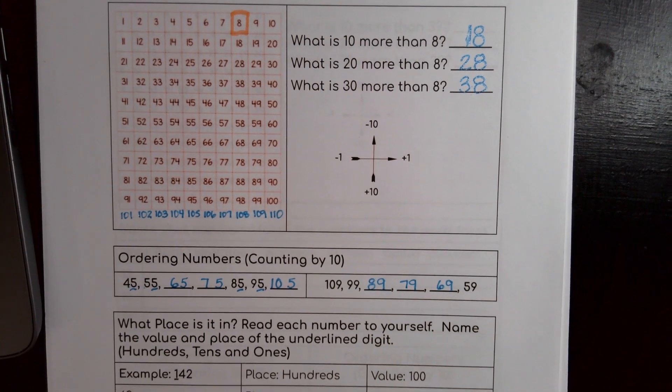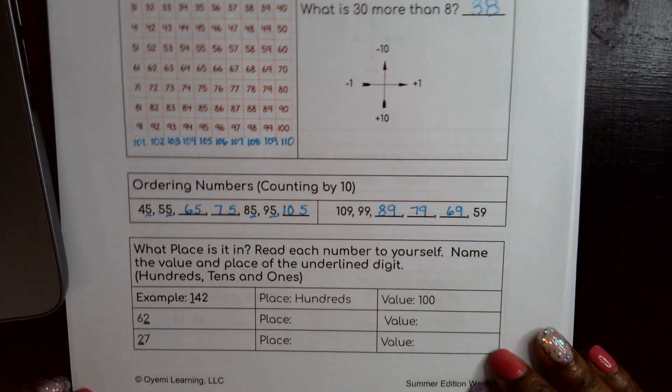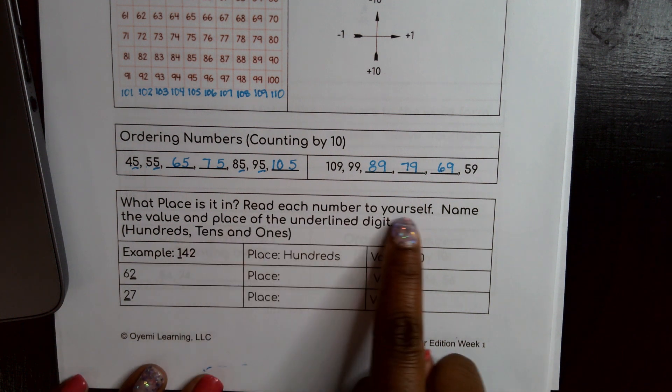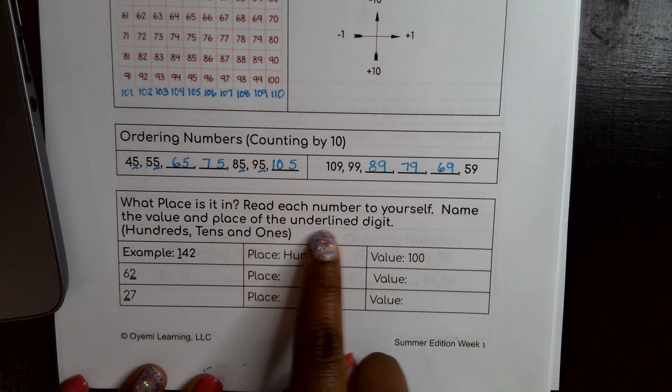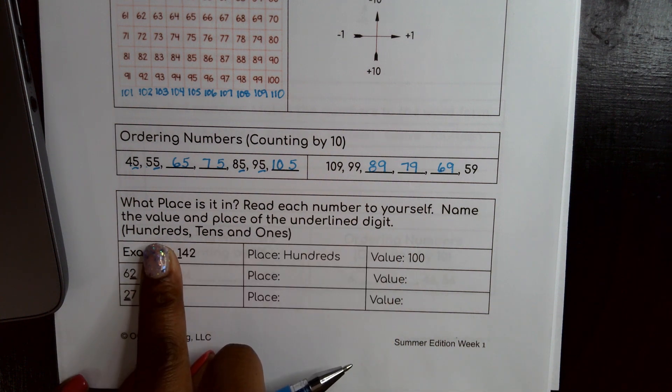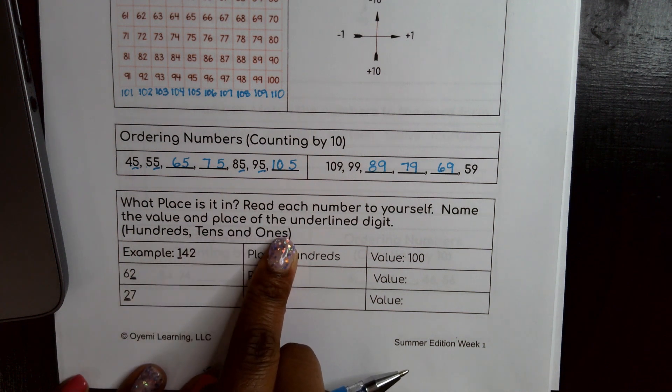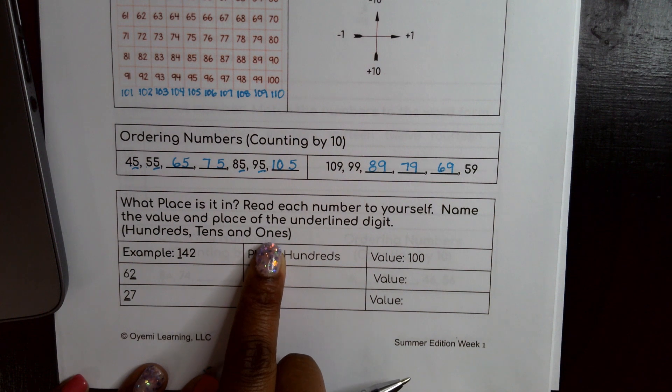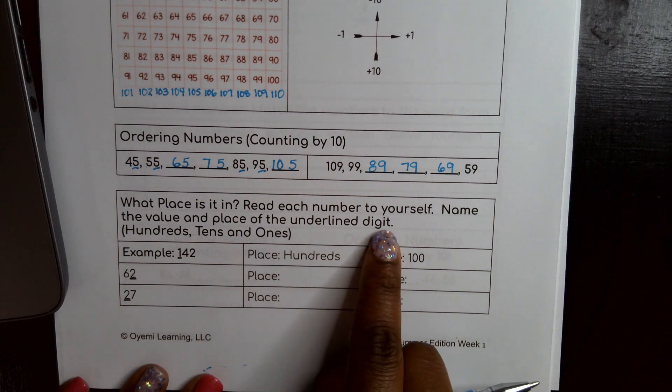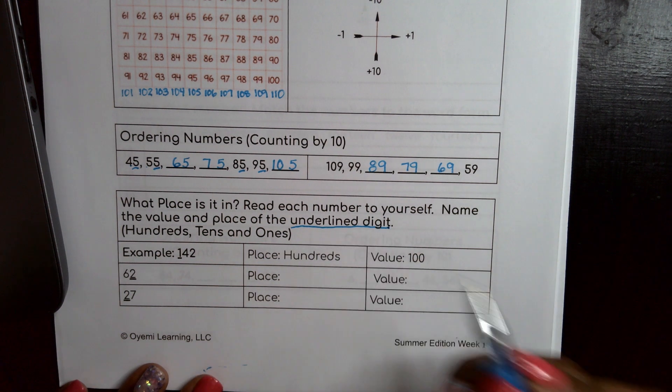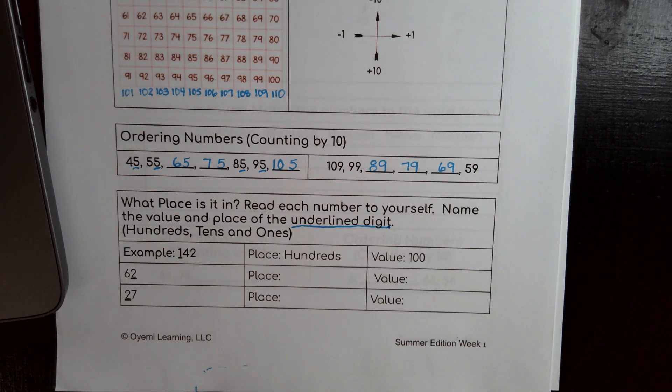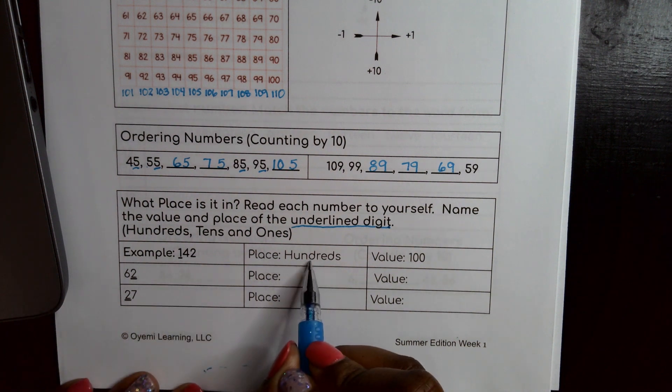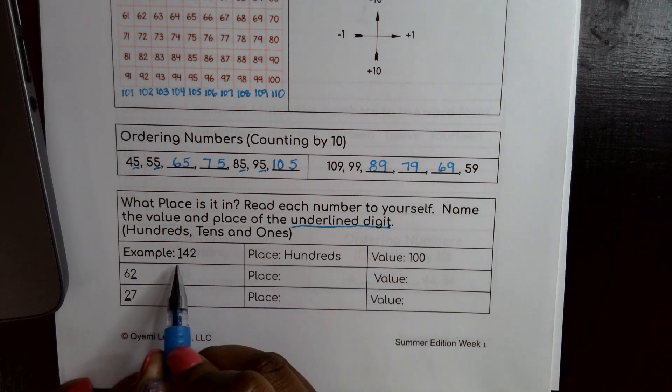The last thing I want to show you today, just our first day together, get that summer brain going in gear. It says, what place is it in? Read each number to yourself, name the value, and place of the underlined digit. So I have the words here, hundreds, tens, and ones. That's probably to help me there with my vocabulary, but also to help me understand place value. The hundreds place, the tens place, and the ones place. So I have to look at the underlined digit. Let me underline that because that's probably important. So right here, I have 142, and the one is underlined. Well, that one is in the hundreds place, and the value of that one is 100.